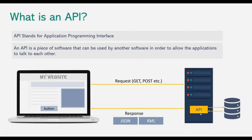An API has endpoints, and an endpoint is nothing but a file location from where you can request the data. An API can have several endpoints. For example, an API for employee information might have one endpoint for all employees, another endpoint to get an employee by its ID, and another to get employees from a particular department.